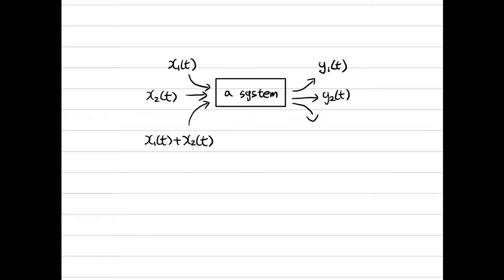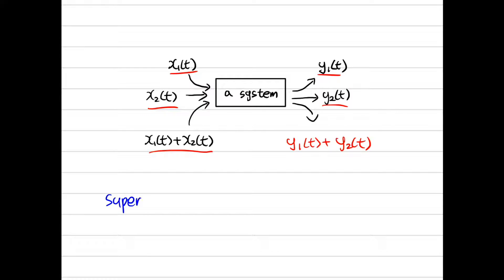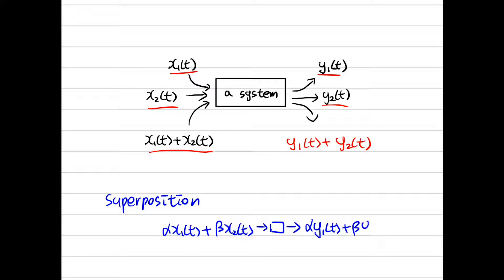The second property is additivity. Additivity means that, as you can see from its name, the added output comes when the added input is entered. Formally, let the output for input x1(t) be y1(t), and for input x2(t), output is y2(t). Here, for added input x1(t) plus x2(t), the output from a system that has additivity is y1(t) plus y2(t). Also, we can state two properties together as superposition. Superposition property means that if the input is alpha*x1(t) plus beta*x2(t), then the output is alpha*y1(t) plus beta*y2(t). That is, superposition property includes both scaling and additivity.